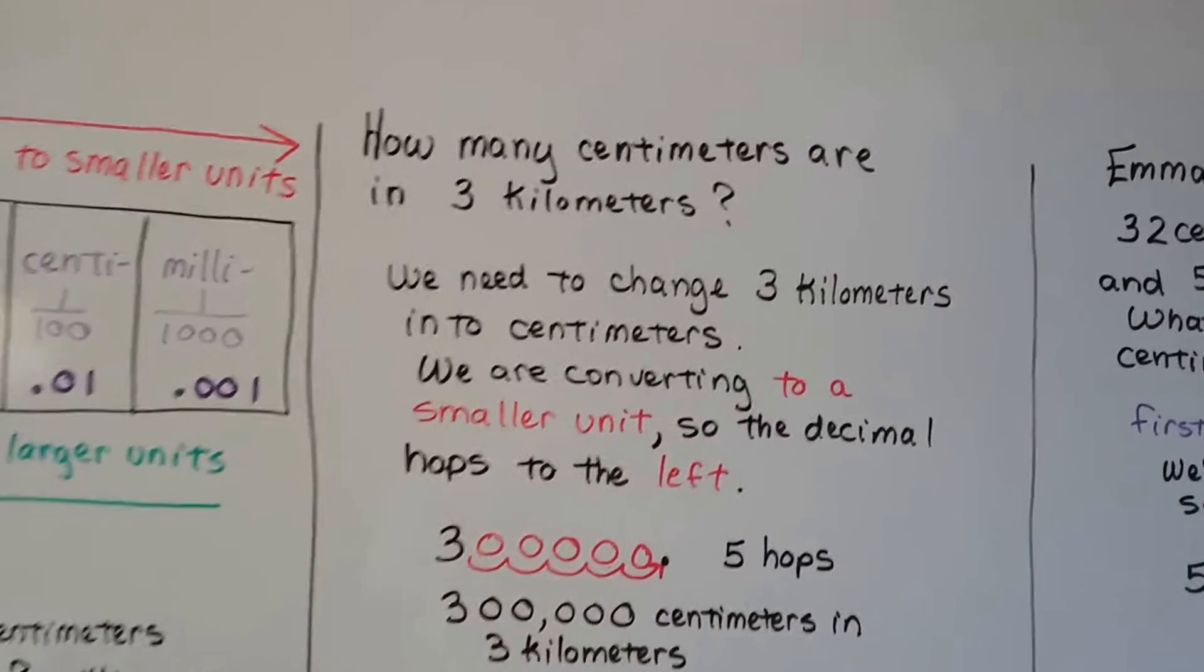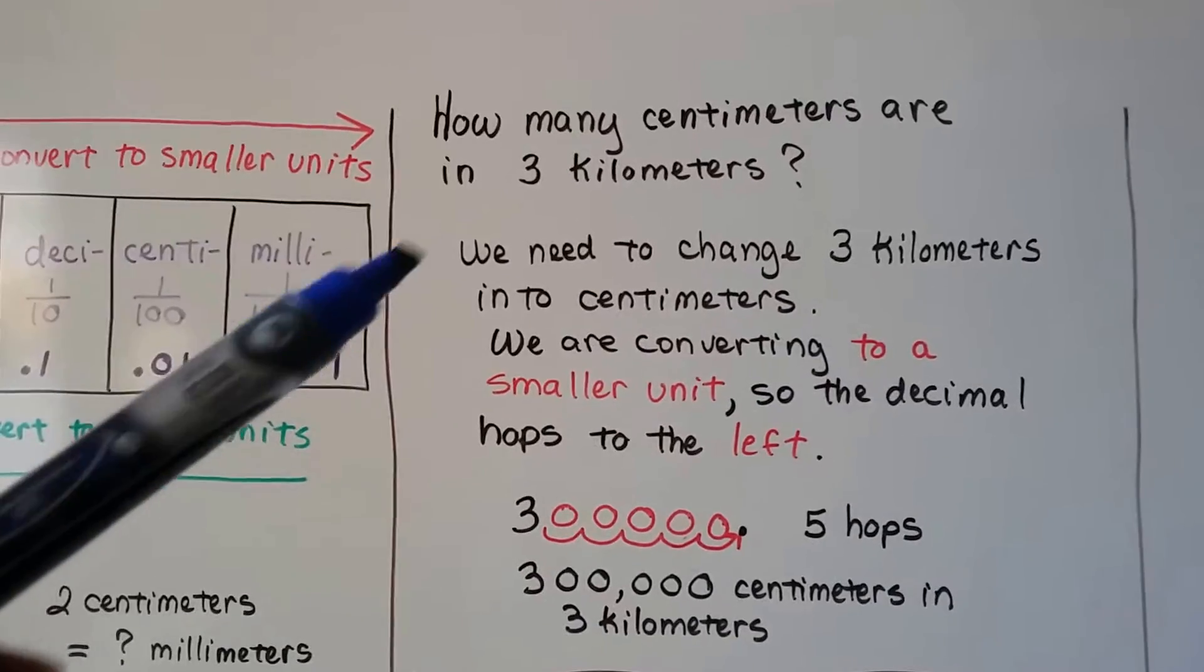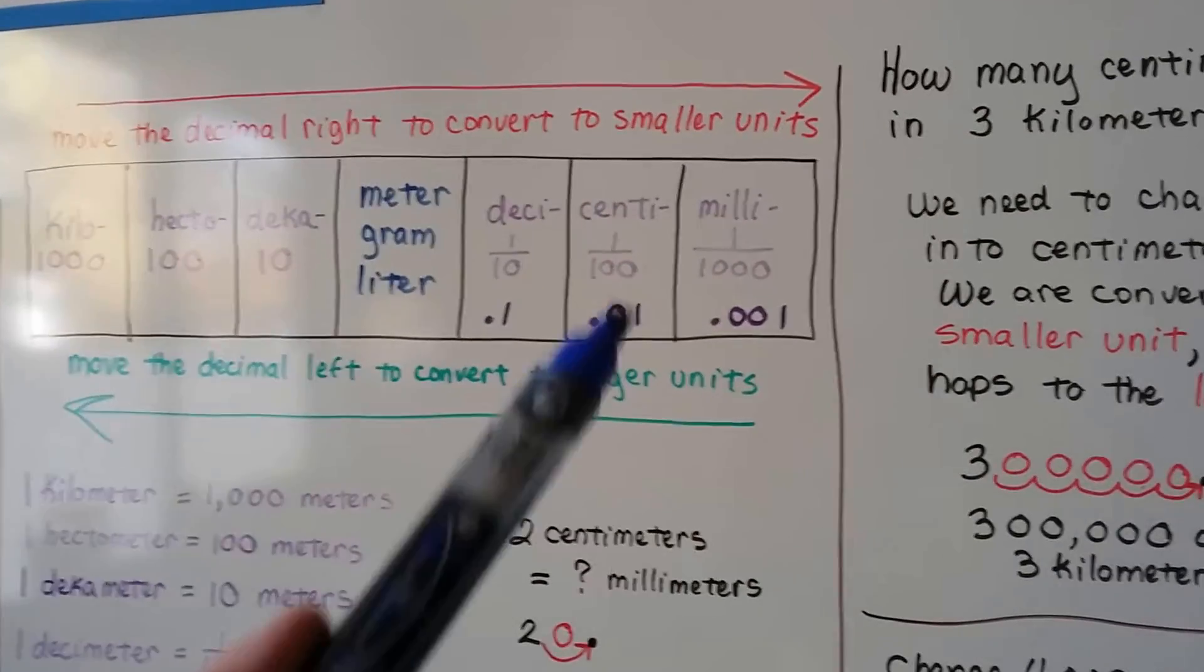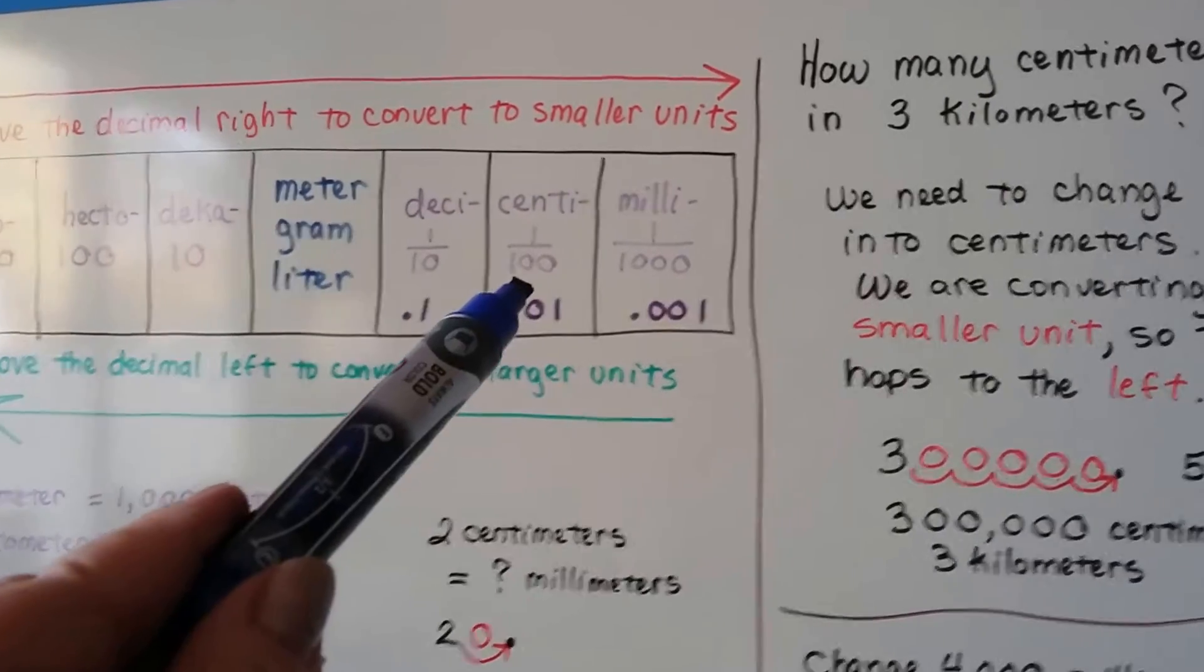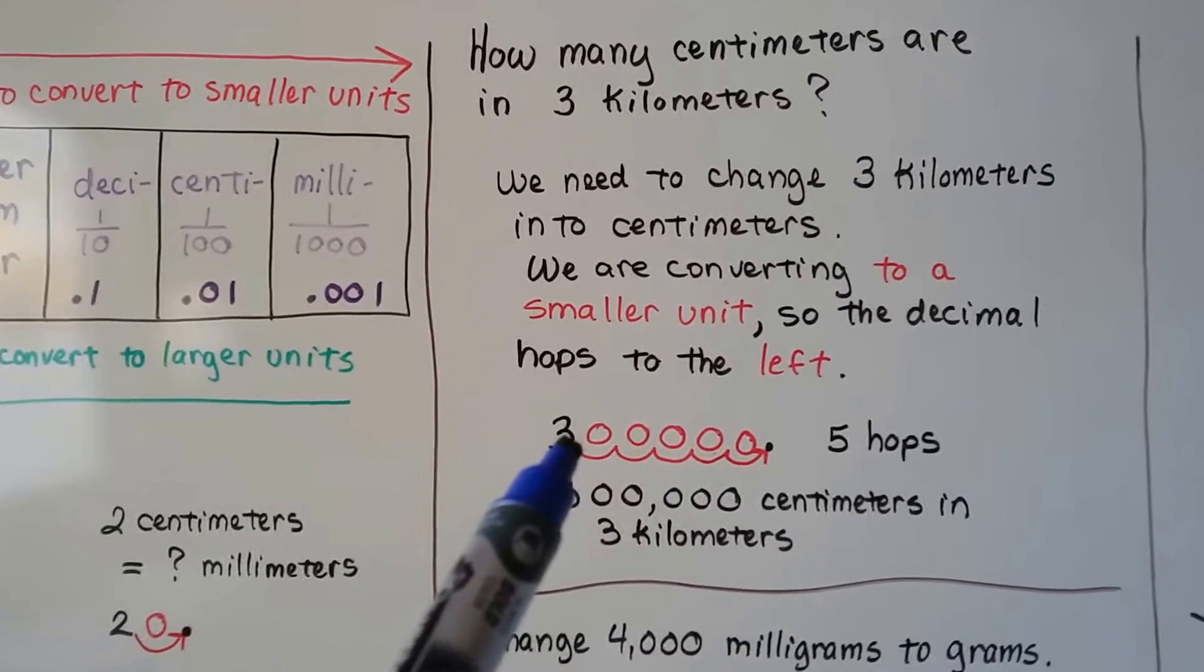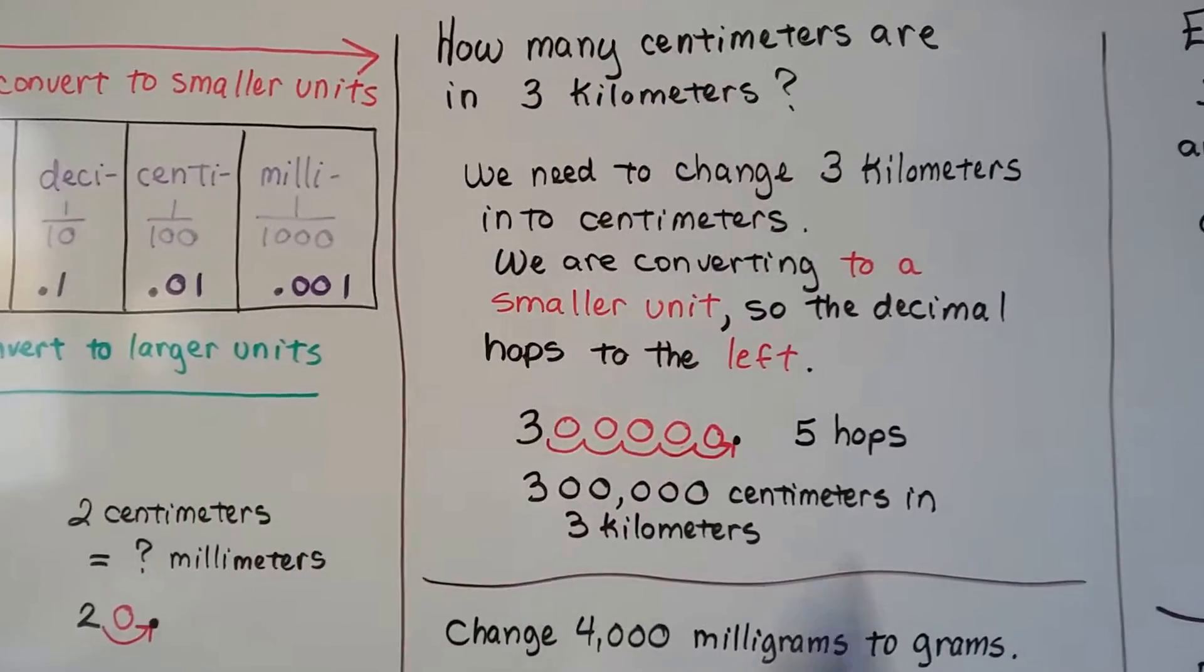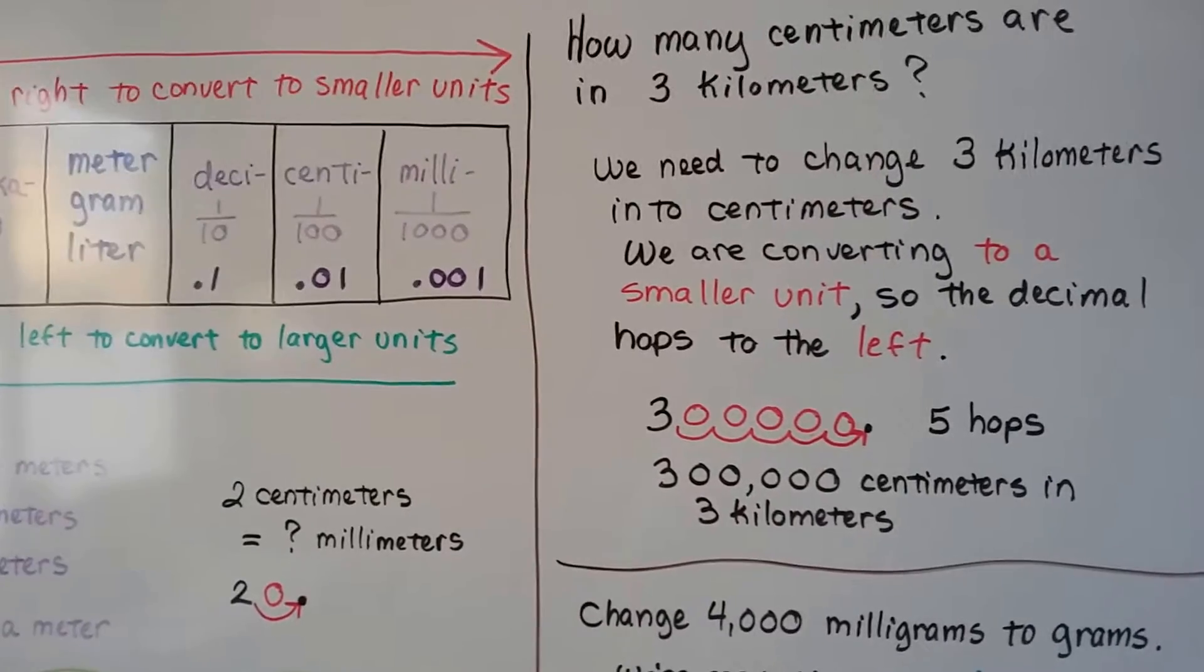How many centimeters are in three kilometers? It depends on where you're from and how you pronounce that. So we're going to change three kilometers into centimeters. So here's kilometers and centimeters are way over here. So let's count the hops. One, two, three, four, five hops. So we're going to do five hops for this three. And the invisible decimal is behind the three. We're going to go one, two, three, four, five, put zeros in as placeholders. And we see we have 300,000 centimeters in three kilometers. So even though this is here, that's counted as a hop. That gets counted.